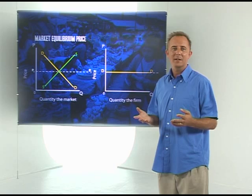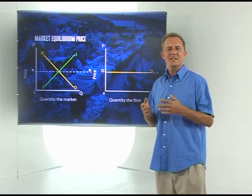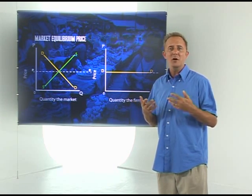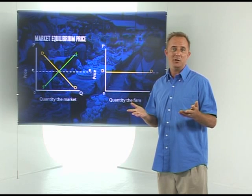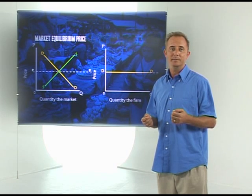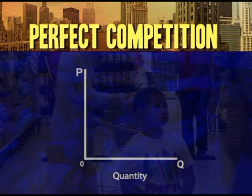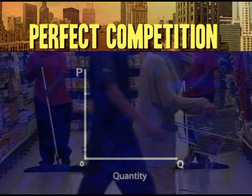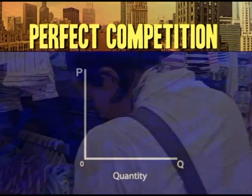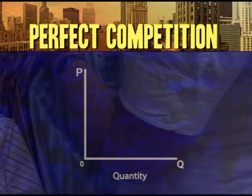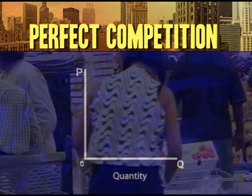Well, if a business can sell everything it makes at the market price, there's no reason why it should sell at a lower price. So under perfect competition, the seller cannot sell his goods at a price higher than the market price, and will not sell at a price lower than the market price. That's why the demand curve for each producer is a horizontal curve.